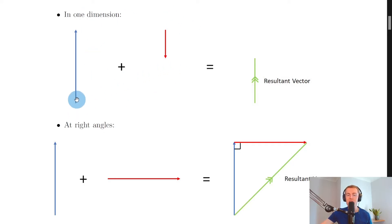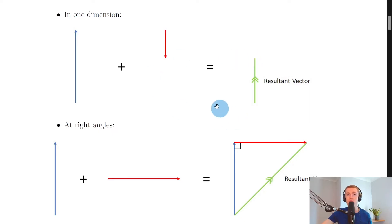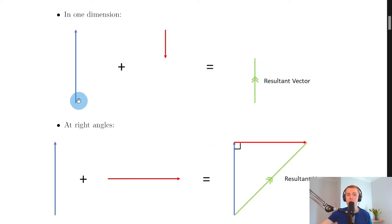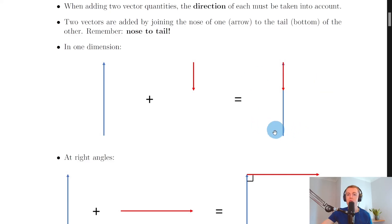Thinking about adding our two vectors in one dimension — we join them nose to tail, adding the tail of the second onto the nose of the first, giving a vector that goes up and then back down. The resultant vector goes from the starting point at the bottom to the finishing point where they overlap, shown going upward with a double arrow. The starting point is here, we go all the way up and back down to the finishing point, so the resultant goes from start to finish shown with the double arrow.